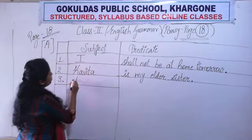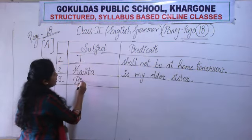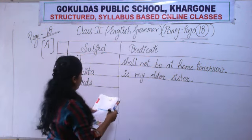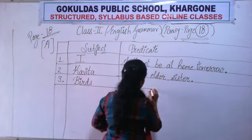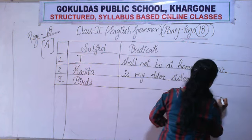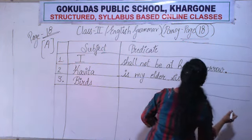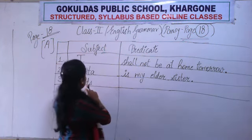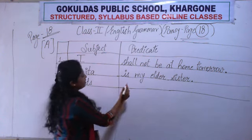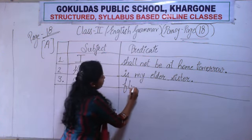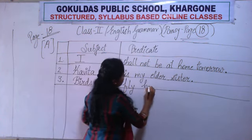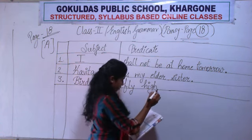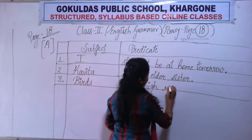Now birds — what will come here? Birds. B-I-R-D-S. Birds fly high in the sky. The remaining part will be the predicate part. So birds is the subject and the remaining part 'fly high in the sky' starts the predicate.